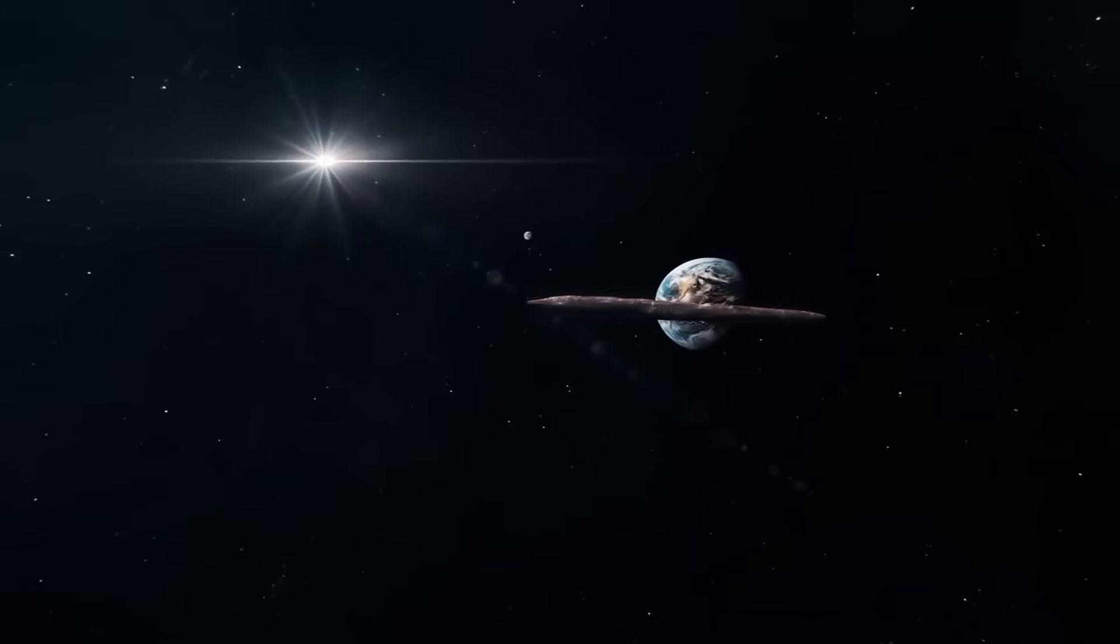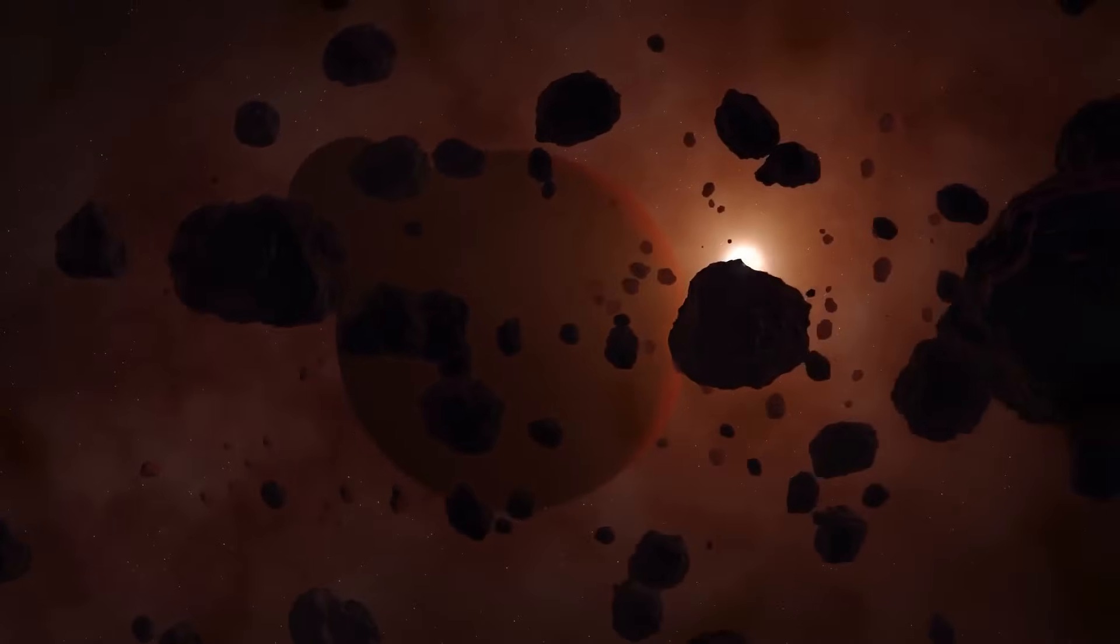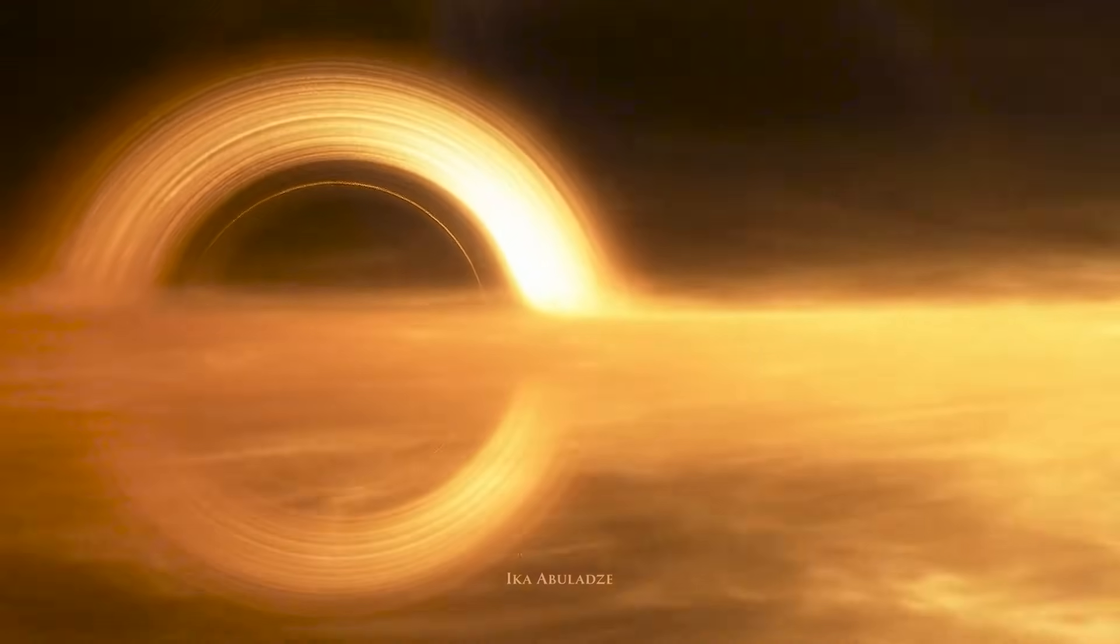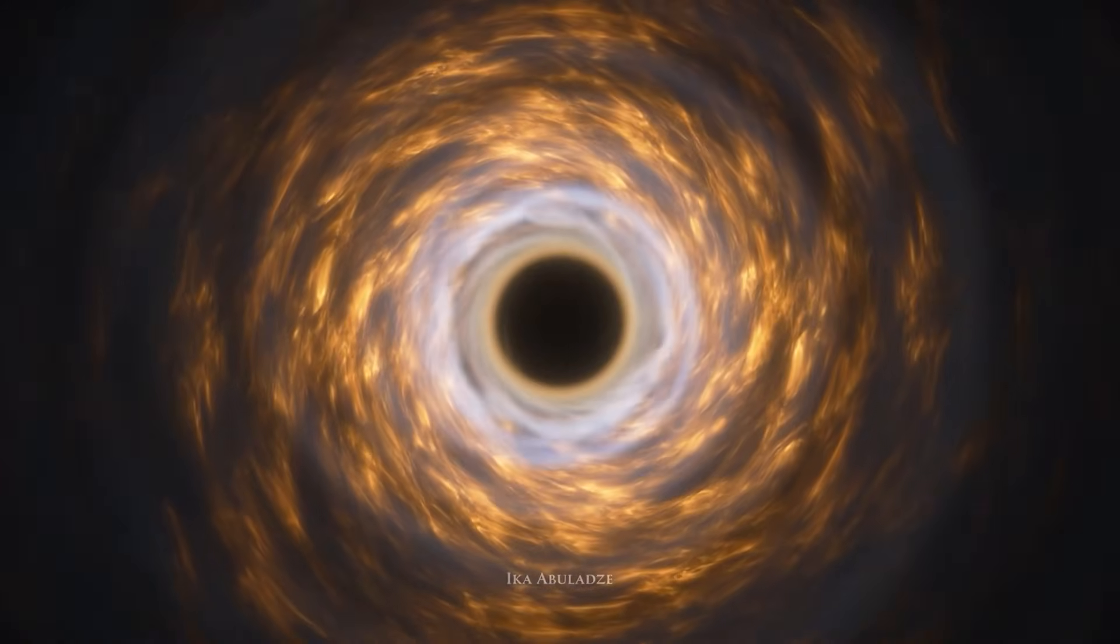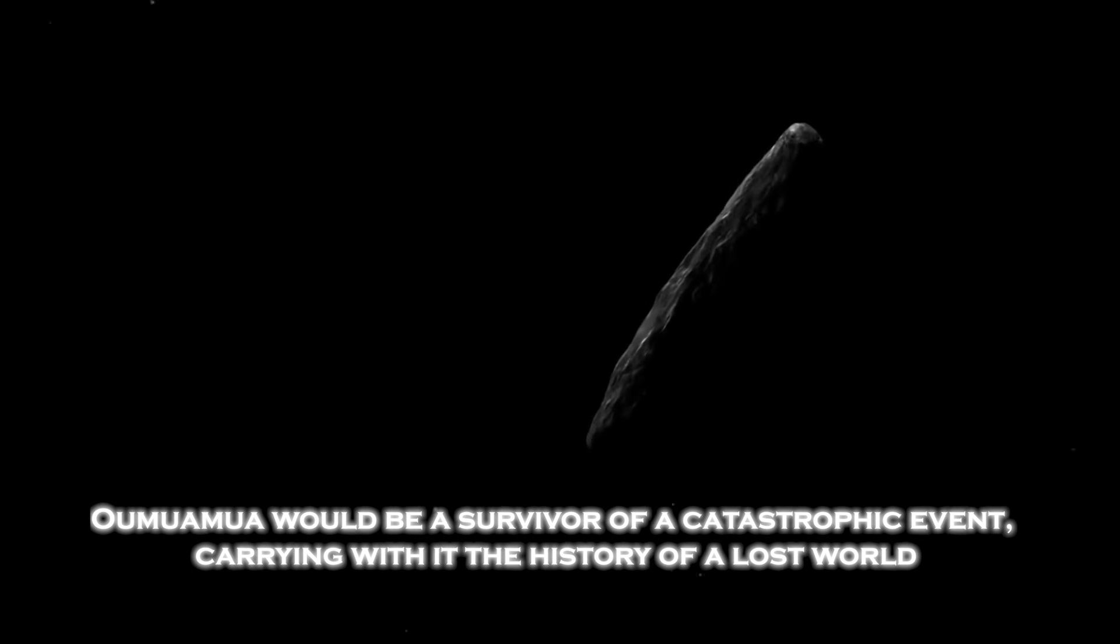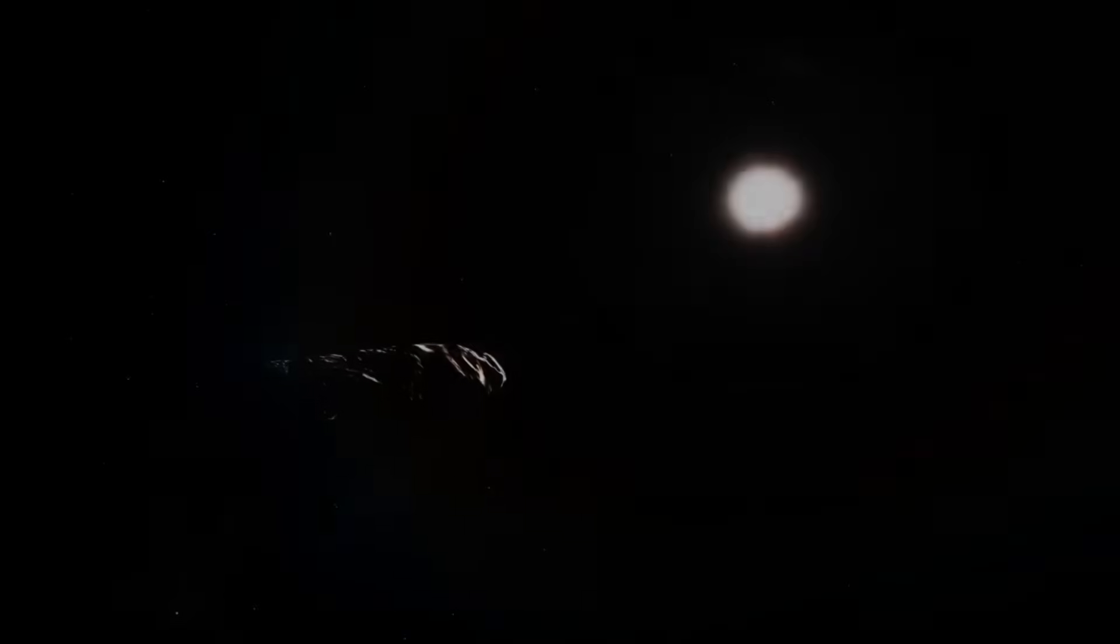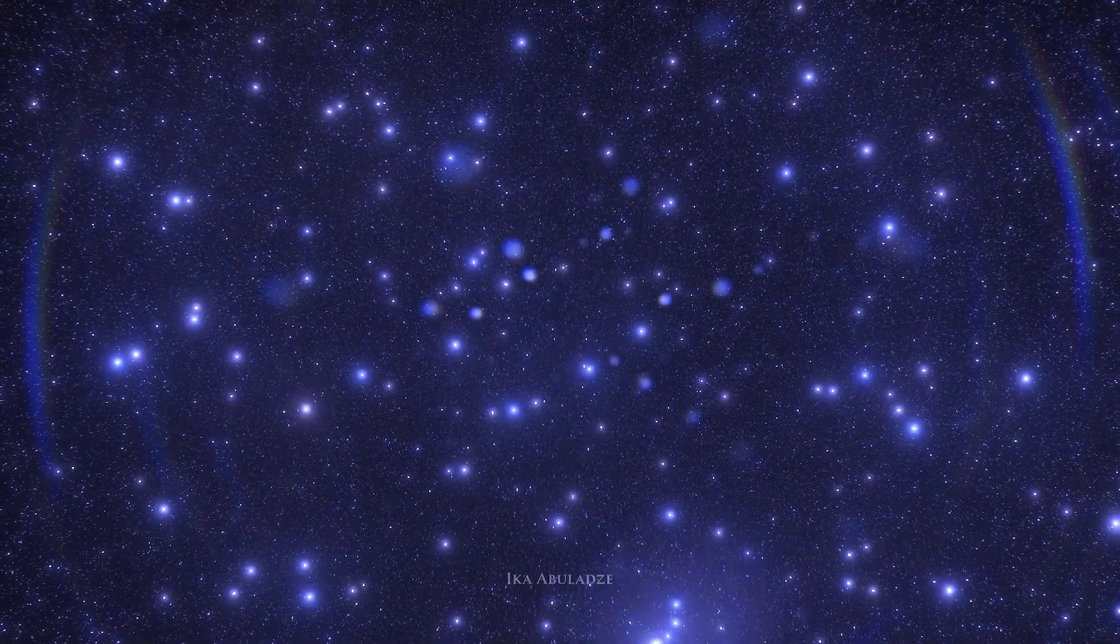One of the most recent theories suggests that Oumuamua could be a fragment of a planet destroyed by extreme gravitational forces. These forces, caused by a massive star or a nearby black hole, could have stretched and torn the planet apart, forming objects with unusual shapes. If this theory is correct, Oumuamua would be a survivor of a catastrophic event carrying with it the history of a lost world. This opens up a new window to study how star systems evolved and change over time, and how catastrophic events can give rise to objects that end up traveling through the galaxy.